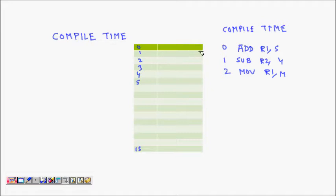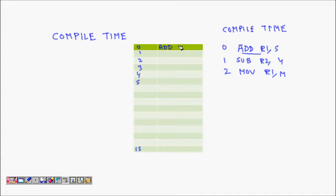So the compiler assigns fixed memory addresses at compile time. When the CPU loads it into main memory: ADD R1,5 is placed at location 0, SUBTRACT R2,4 at location 1, and MOVE R1 to some memory location is placed at location 2.